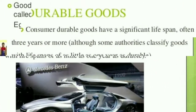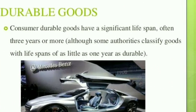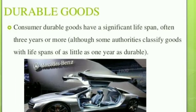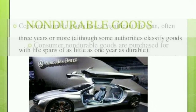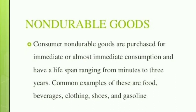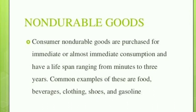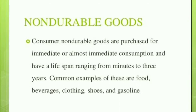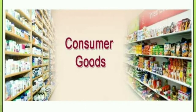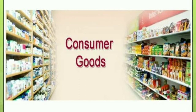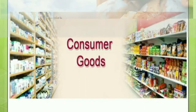Producer goods can be termed as fixed assets. Durable goods last three or more years. Non-durable consumer goods are goods which are consumed immediately or utilized right away — their span is very short. Here are a few pictures which you can associate with consumer goods.